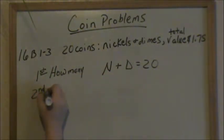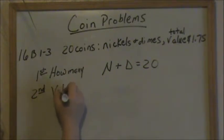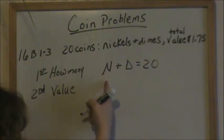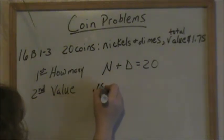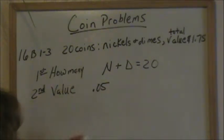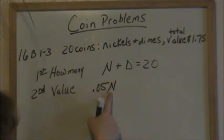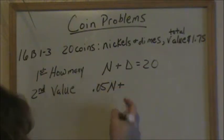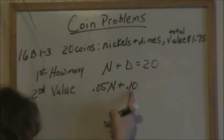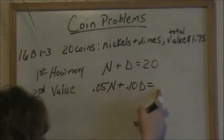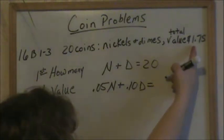Our second equation we can call the value. What is the value of a nickel? The value of a nickel is 5 cents, so for every nickel we have, we multiply it by 5 cents — written as .05. So we can say 5 cents times every nickel we have, and then the value of a dime is 10 cents. 10 cents times every dime we have equals the total value, which the problem tells us is $1.75.